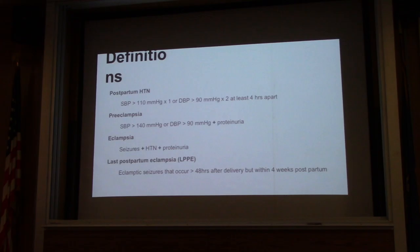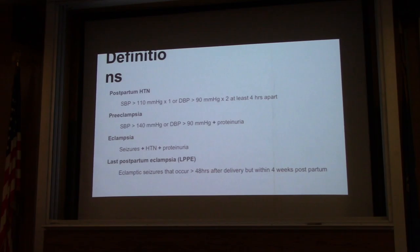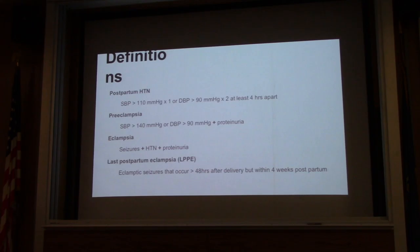Going over some definitions of the various entities. Postpartum hypertension is defined as one reading of systolic blood pressure greater than 160, or a diastolic blood pressure greater than 90 for at least two consecutive readings at least four hours apart. Preeclampsia is hypertension associated with proteinuria, and eclampsia is hypertensive proteinuria plus seizures. Late postpartum eclampsia is an eclamptic seizure that usually occurs anywhere from 48 hours postpartum, but has also been described as occurring up to four weeks — one month after delivery. So you've got a wide time range.